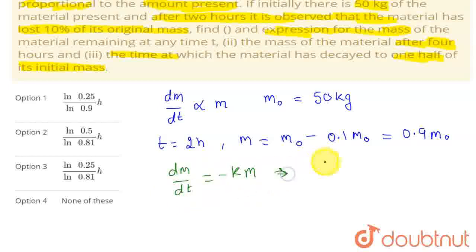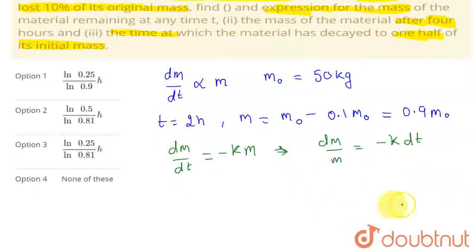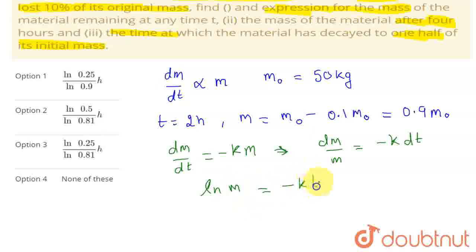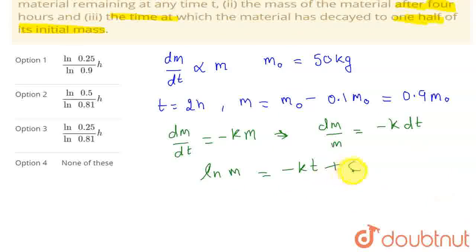We can write this equation as dm/m equals minus k dt. If we integrate this equation, we will get ln m equals minus kt plus C. Integration of dm/m is ln m and integration of dt is t. C is the integration constant. Let's find this integration constant.